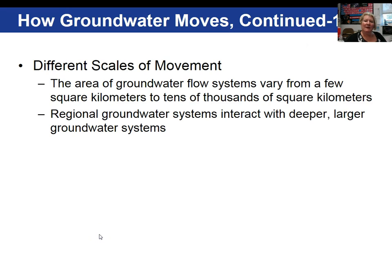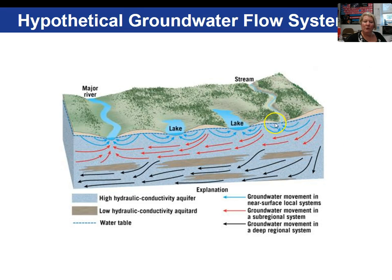The extent of groundwater flow systems varies greatly. Some groundwater systems are regional and the flow can be quite deep — these are considered large groundwater systems. The light blue arrows show flow lines for near-surface systems, the red represents deeper sub-regional systems, and the black lines show groundwater movement in a regional system.